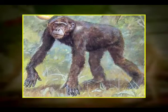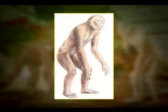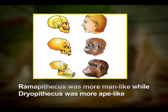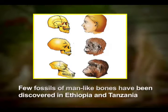About 15 million years ago, primates called Dryopithecus and Ramapithecus were existing. They were hairy and walked like gorillas and chimpanzees. Ramapithecus was more man-like while Dryopithecus was more ape-like. A few fossils of man-like bones have been discovered in Ethiopia and Tanzania.